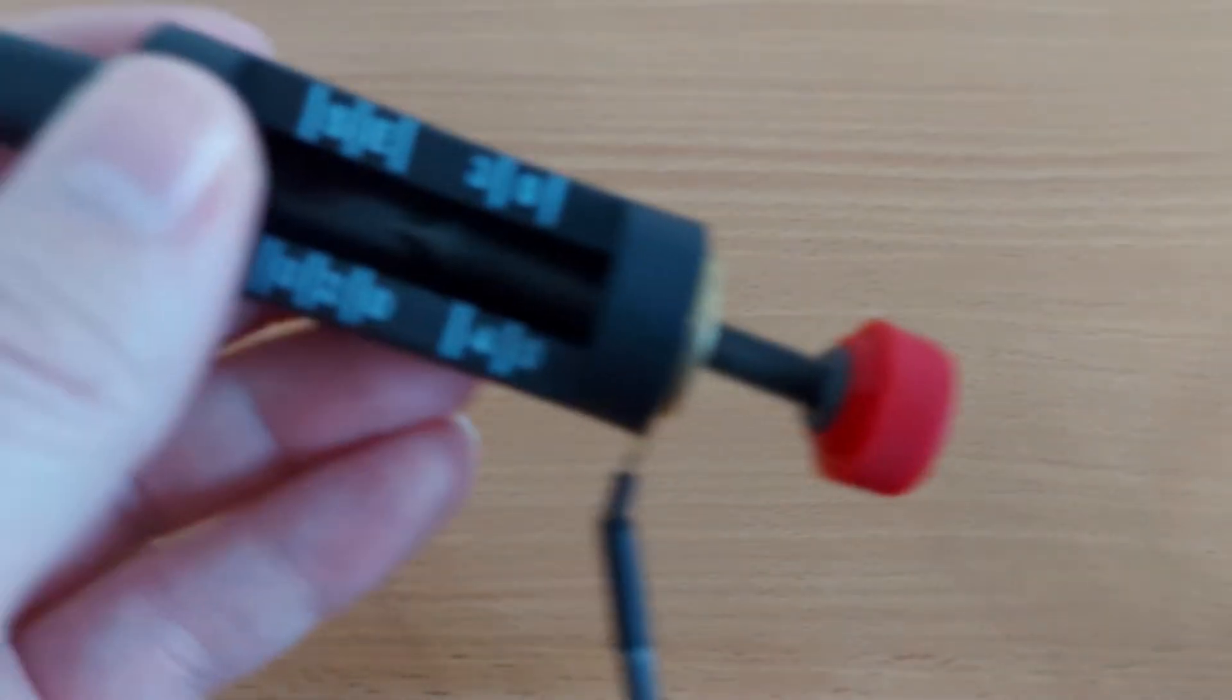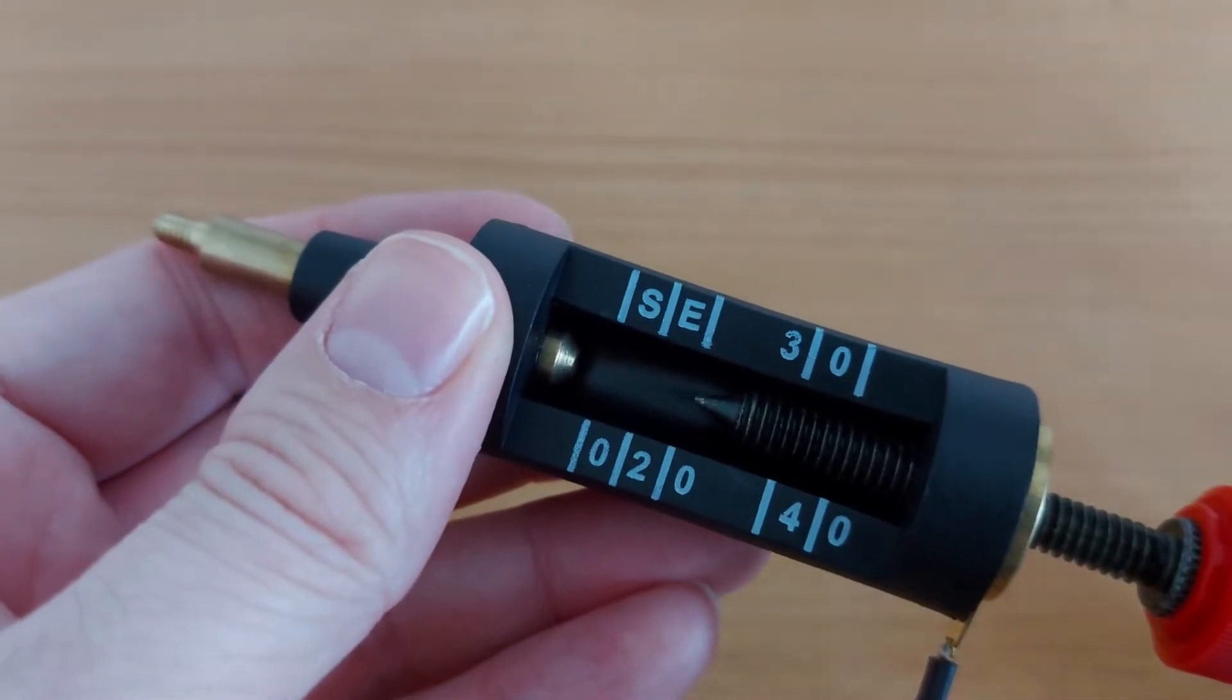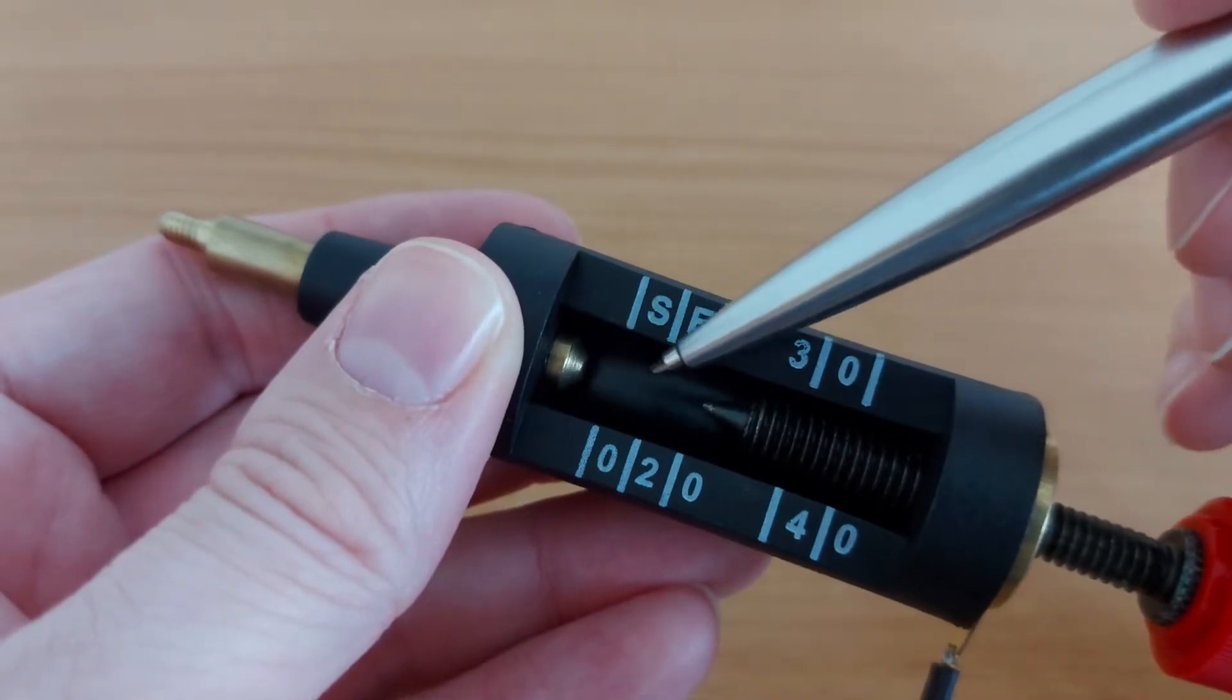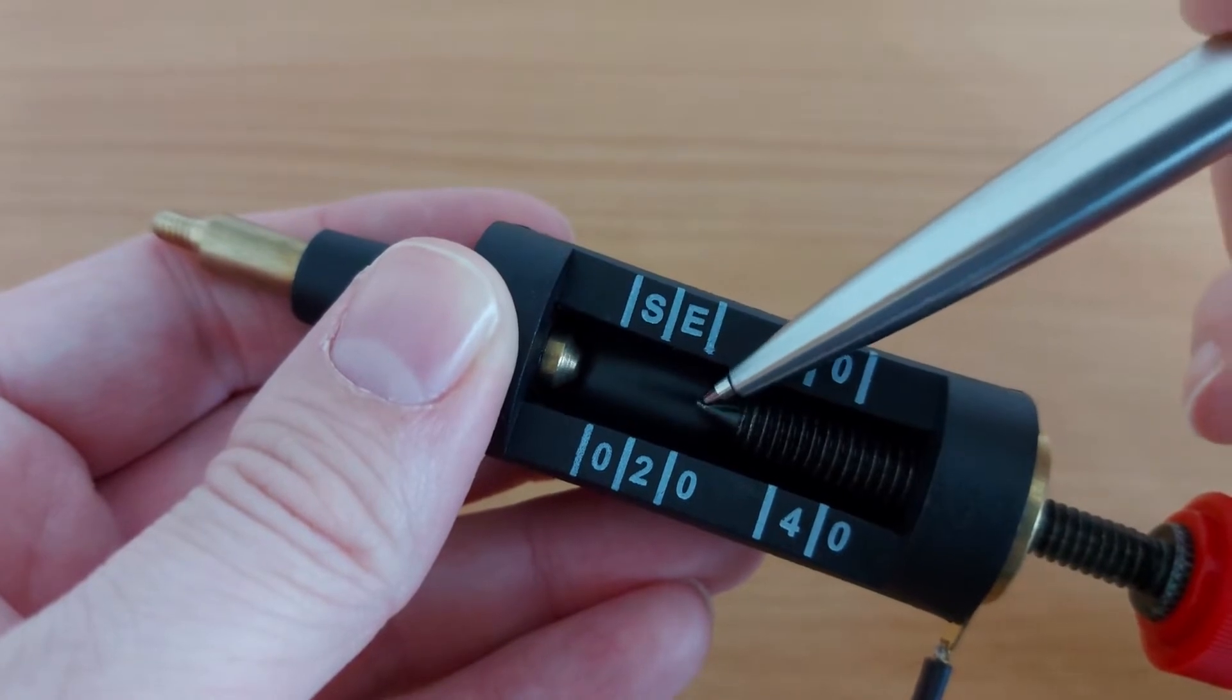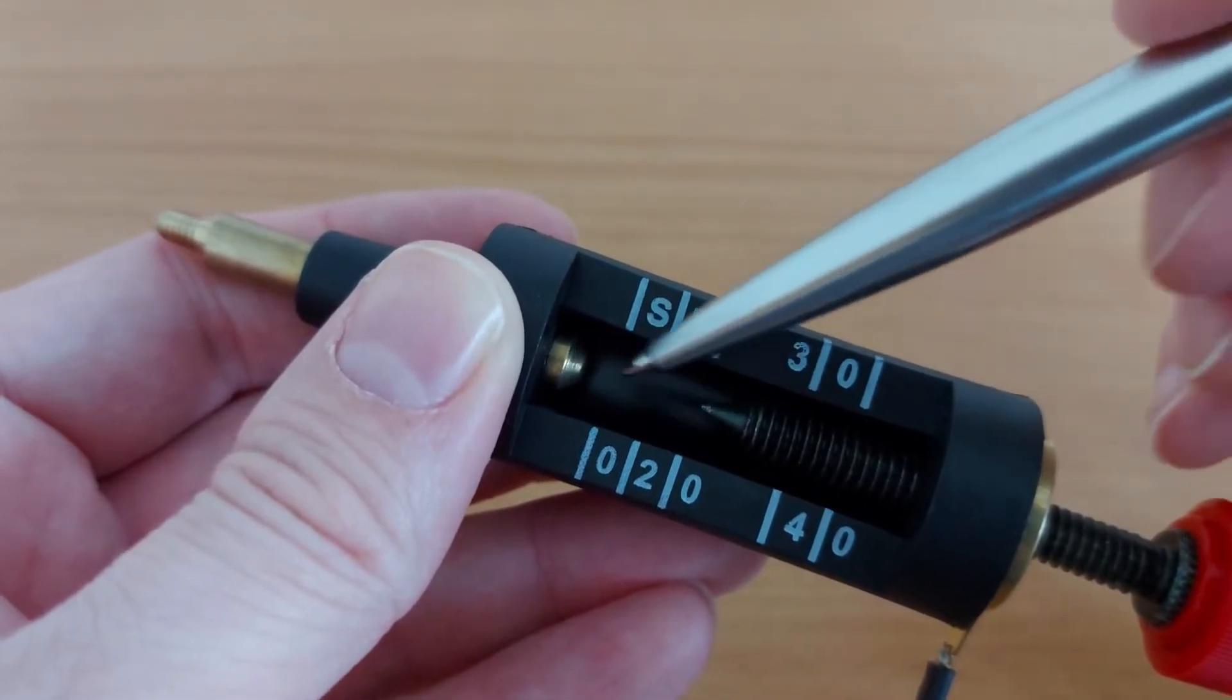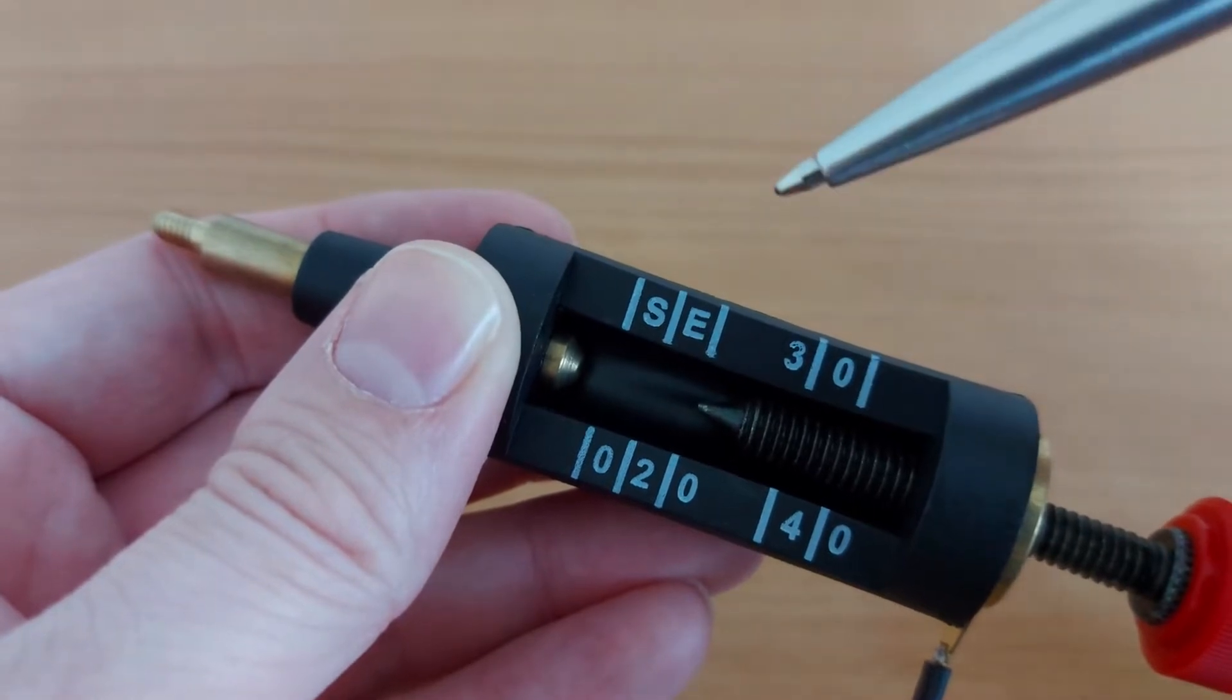Now when the engine is running we should if all is well see a spark leaping from that point there to this point here and that at least confirms the ignition system is producing electricity. Furthermore we want to check that that electricity is consistent. It shouldn't for example periodically disappear for a couple of seconds.